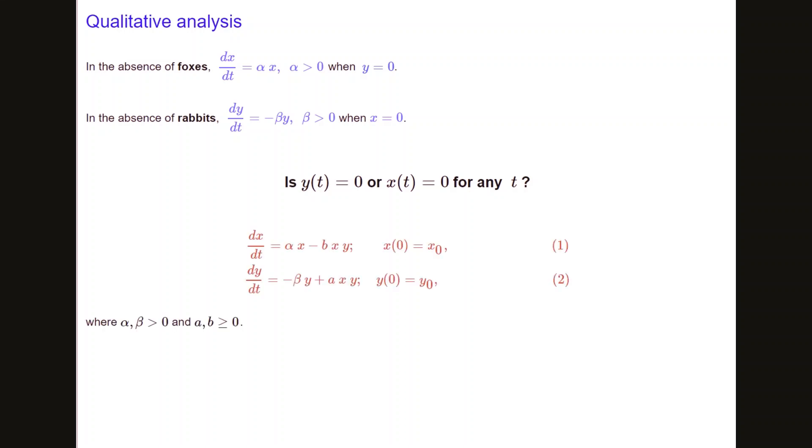So we define our equations by adding a factor in each of them. Equations one and two represent the factors of bxy and axy, which shows the relative rate of increase in the population of foxes in number two, represented by axy, and that relative rate of increase in foxes occurs due to the availability of food. While in number one there is a factor representing a relative rate of decrease in the population of rabbits due to predation by foxes.